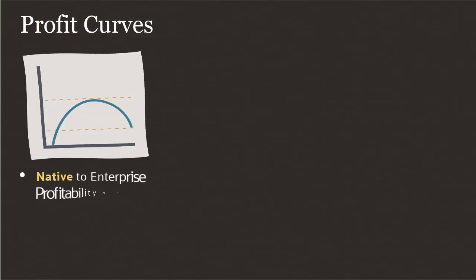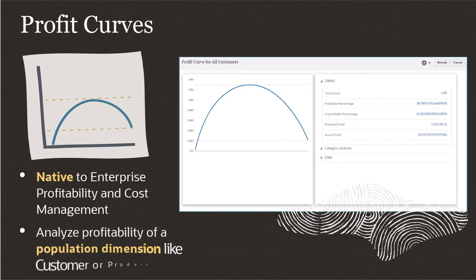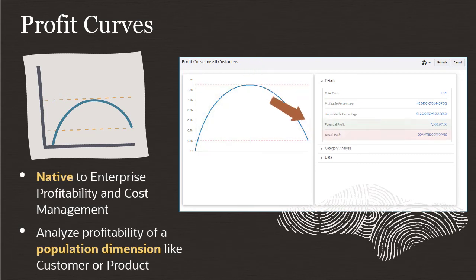Profit curves are native to Enterprise Profitability and Cost Management. The graph analyzes the profitability of a population dimension such as customers or products. The top of the curve shows the point where profitability starts to become negative. You can quickly see what percentage of the population is profitable and unprofitable, see the proportion of the population that contributes to profit or detracts from it, and compare your potential profit to your actual profit.